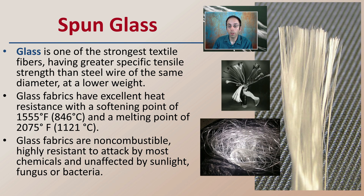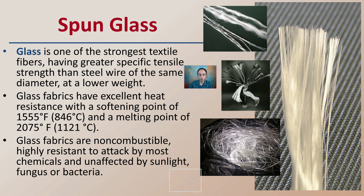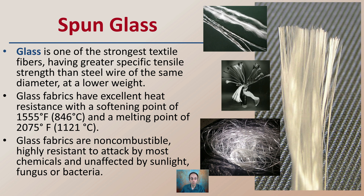Lastly, we have spun glass — one of the strongest textile fibers, having greater specific tensile strength than steel wire of the same diameter at a lower weight. Glass fabrics have excellent heat resistance with a softening point of about 1,555 degrees Fahrenheit (846°C) and a melting point of over 2,000 degrees Fahrenheit (1,100°C). Glass fabrics are non-combustible, highly resistant to attack by most chemicals, and unaffected by sunlight, fungus, or bacteria. This makes spun glass great for areas with high sunlight exposure or chemical resistance needs, though its texture means other fibers are more commonly used in clothing.